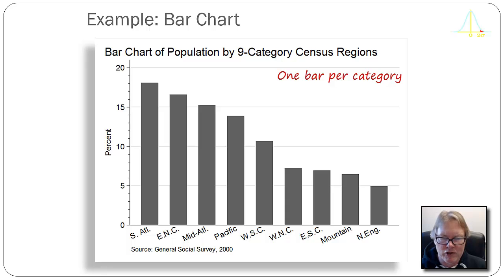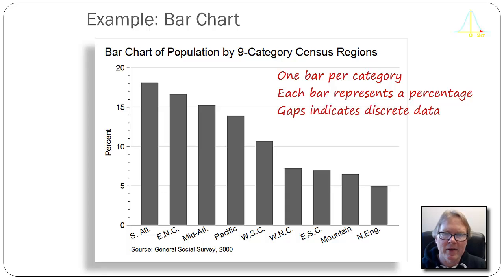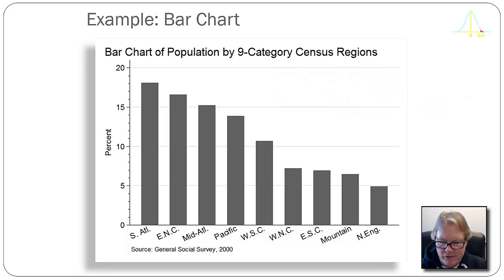The bar is raised or extruded up to the percentage of objects in that category, so we have approximately 18% of our sample in the South Atlantic and approximately 17% of our sample in the East North Central, and so forth. And the bars are separated or have a gap, again, giving the impression or alerting your reader that these are discrete, non-orderable measures.